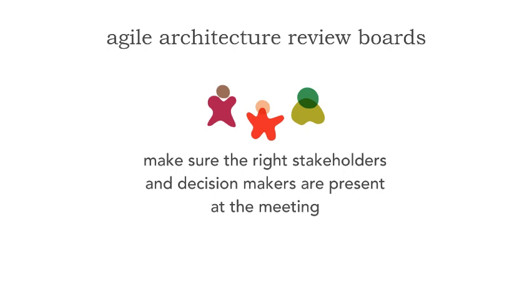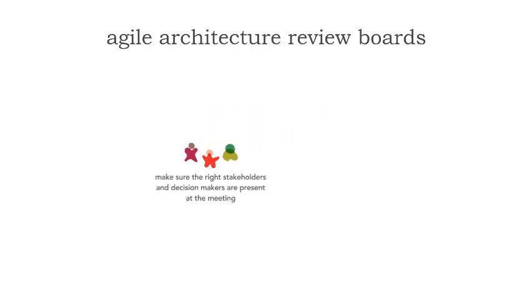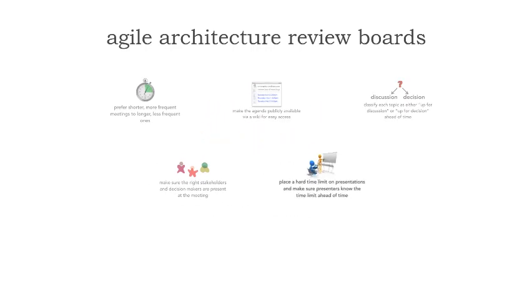If you have an Architecture Review Board that meets twice a week — ours on Tuesday and Thursday at 3 to 4 — then everybody is busy. You want to make sure that if something is up for decision, the right people are there to actually make that decision and keep things moving along.